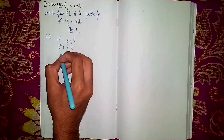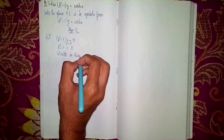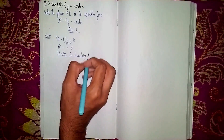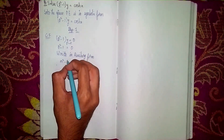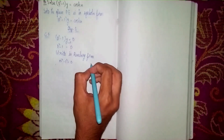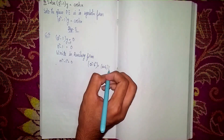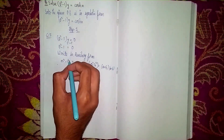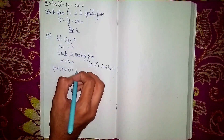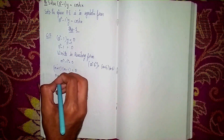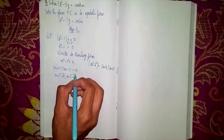Now we write the equation in auxiliary form. Auxiliary form means we replace D with m. So it becomes m² minus 1 equals zero. We can factor this as a difference of squares: a² minus b² equals (a+b)(a-b). Since 1² equals 1, it becomes (m+1)(m-1) equals zero.